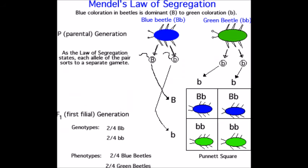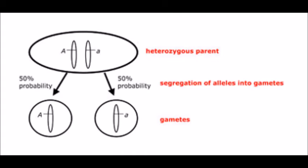Based on these results Mendel proposed the law of segregation, which states that each organism contains two alleles for each trait and that these alleles segregate during the formation of gametes so that each gamete contains only one allele. If an organism is heterozygous for a gene, then half of the gametes it produces will contain one of the two alleles and half will contain the other.